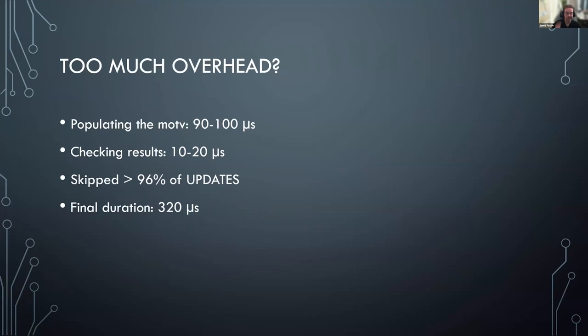I was concerned that adding another TVP and extra statements to populate and read it would add too much overhead. But I needn't have worried. Populating the memory-optimized table variable — querying two other TVPs and the physical table — took between 90 and 100 microseconds. Checking the results by querying the TVP took 10 to 20 microseconds. Because of this approach, and because of how much redundant data is being passed into us, we ended up skipping the update statement 96% of the time. This brought the average runtime for the stored procedure down to 320 microseconds — which calls for a victory dance.